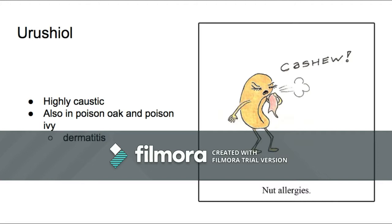The urushiol oil found in the shell is highly caustic and can cause allergic reactions. It is the same oil found in both poison oak and poison ivy that causes severe dermatitis. Many people working in the cashew industry have permanent damage caused by handling cashew shells. Many factories don't give out gloves to their workers, forcing them to touch the shells with their bare hands.